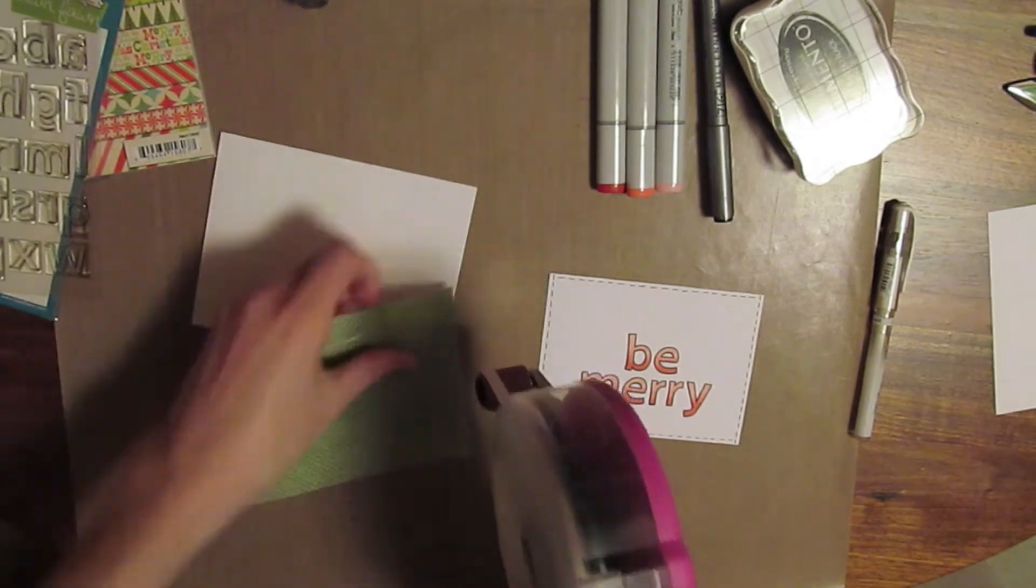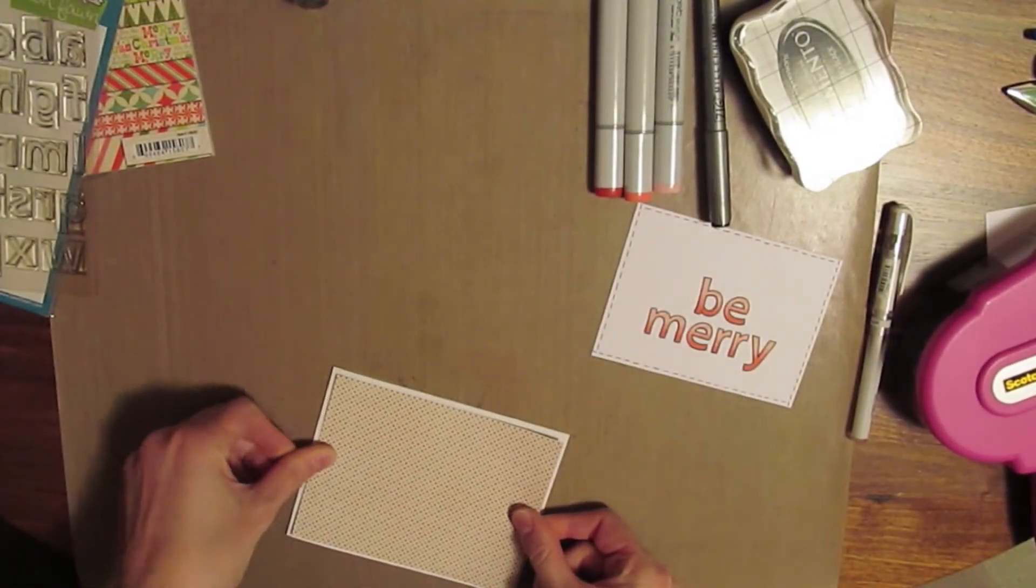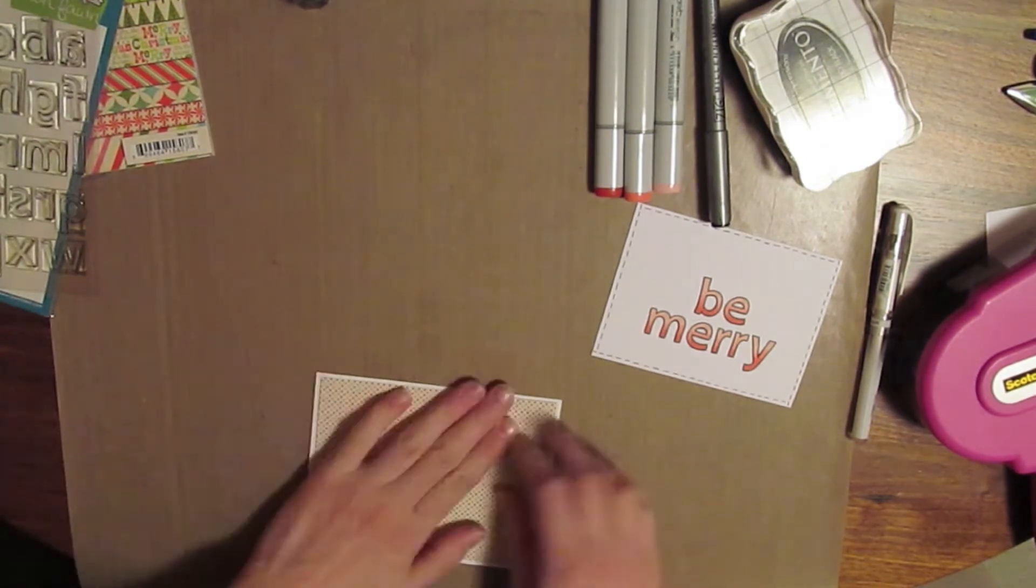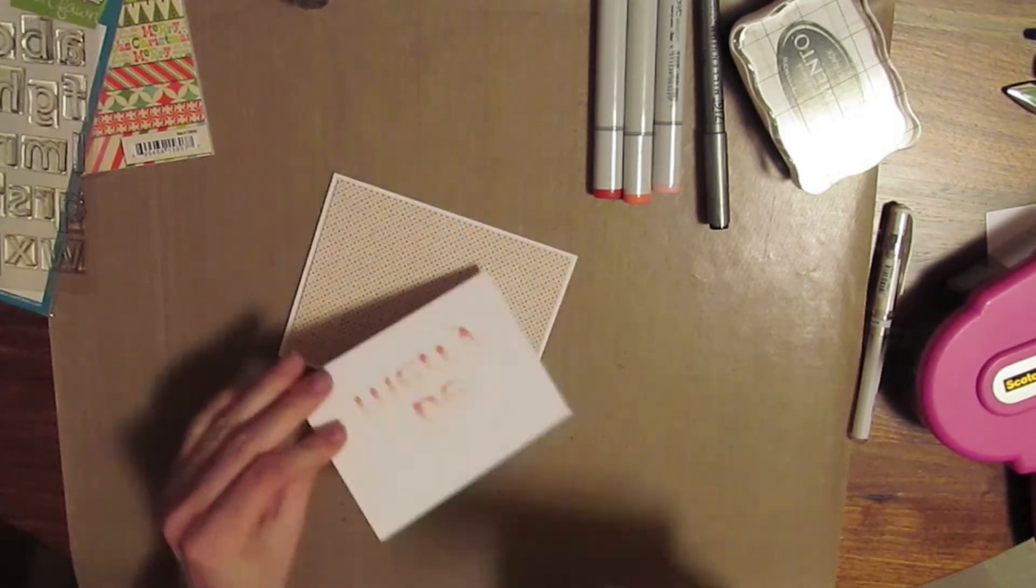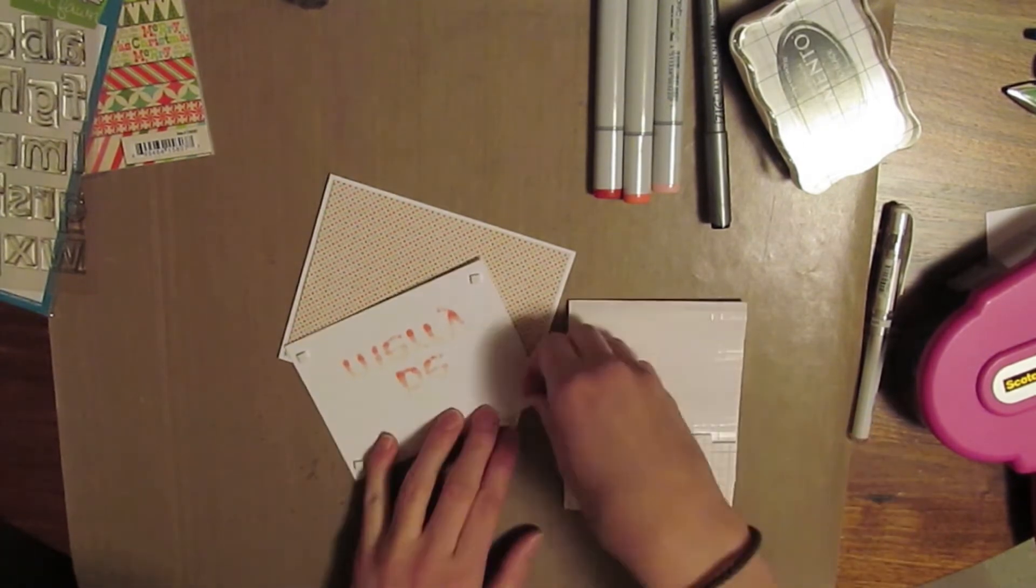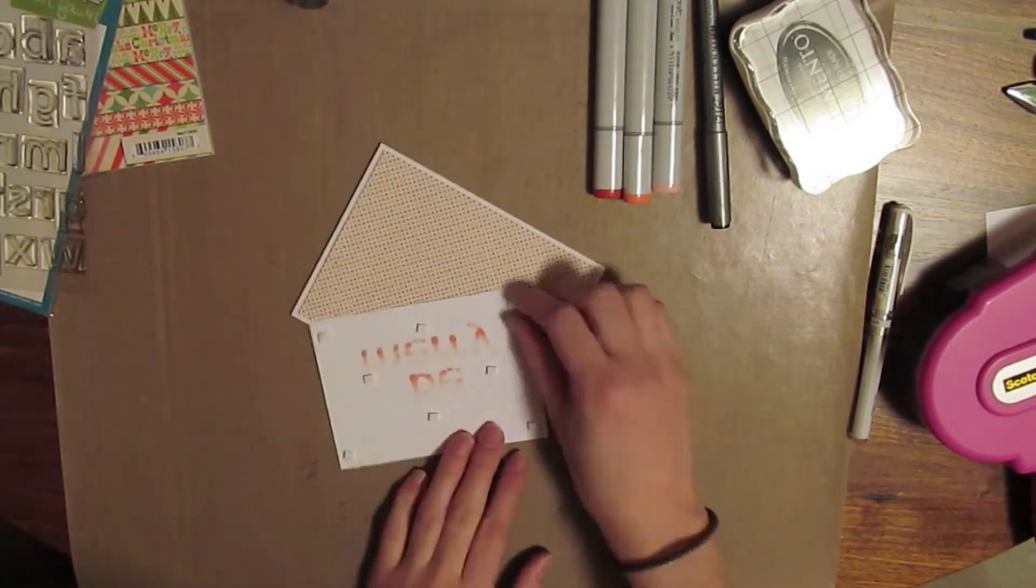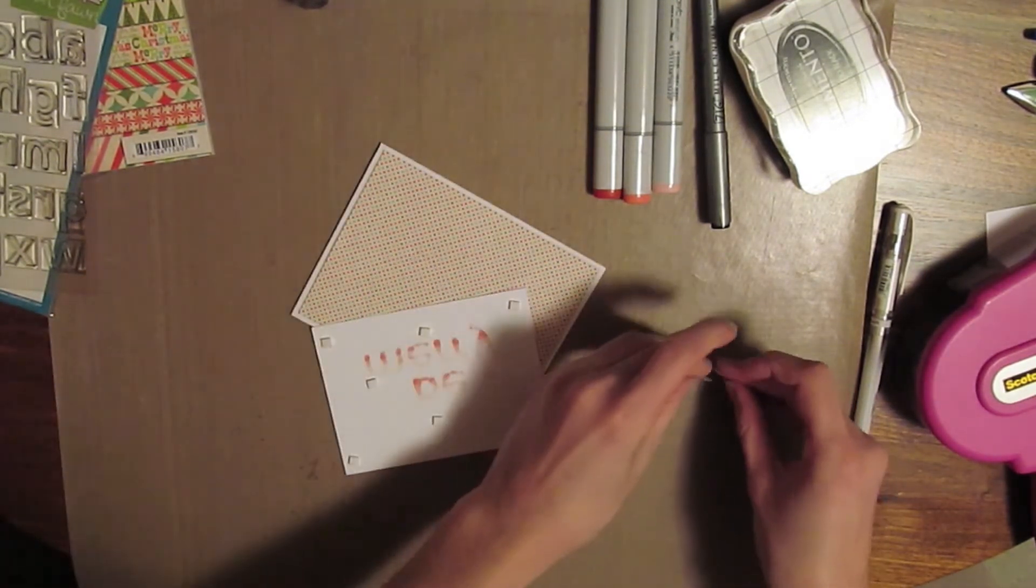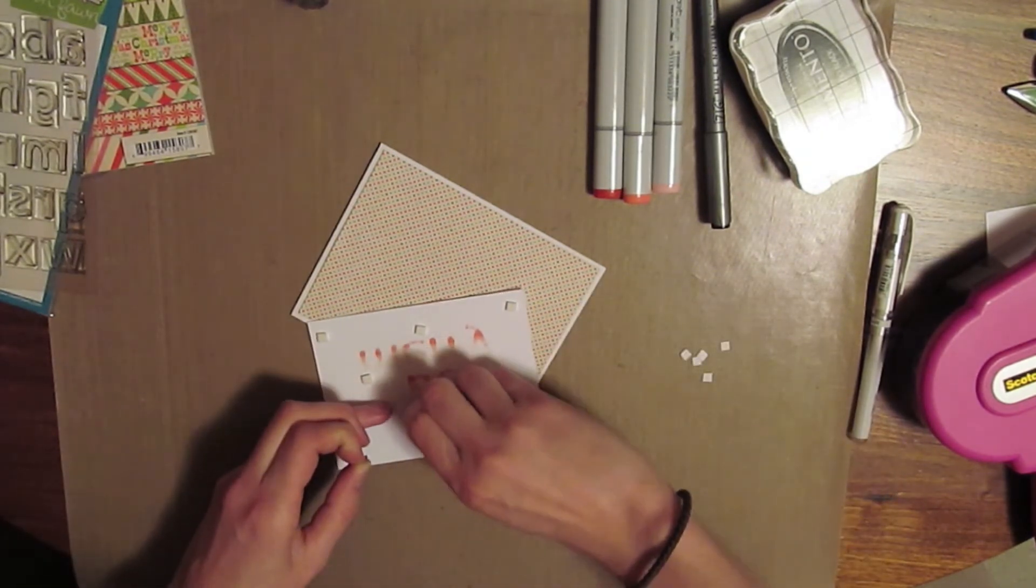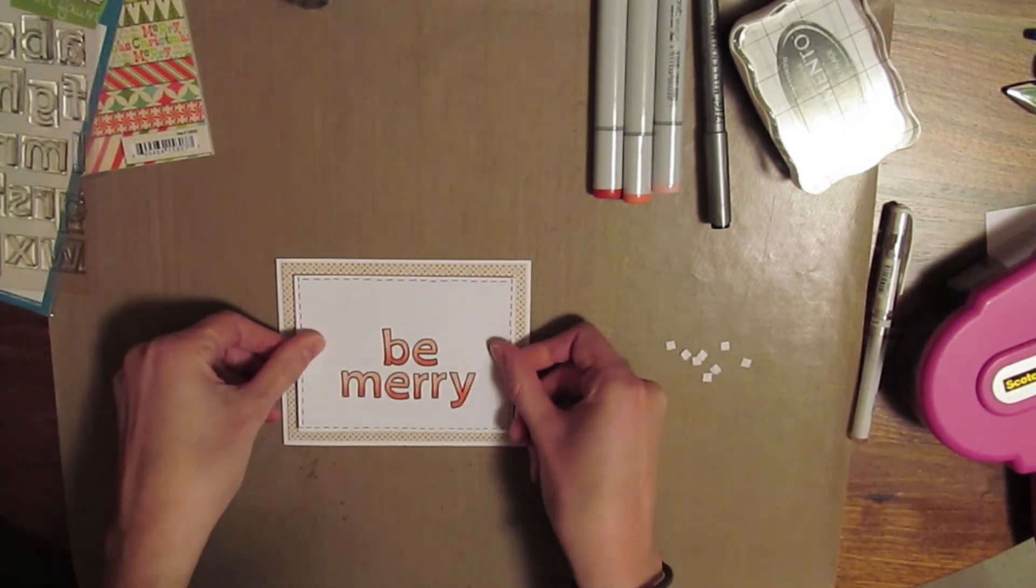So I'll just adhere down the pattern paper. And then I'm going to use pop dots to adhere down the white piece. And after I did that, I decided that it looked too plain on the front and I wanted to add something. So I actually took off the white cardstock piece from the pattern paper and the pop dots, as you'll see in a minute.